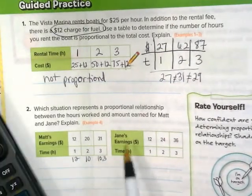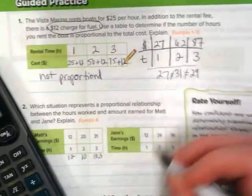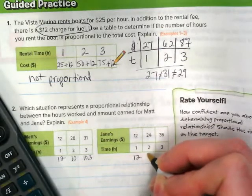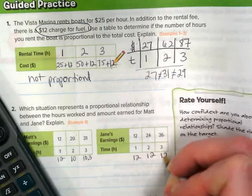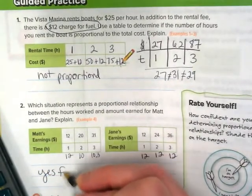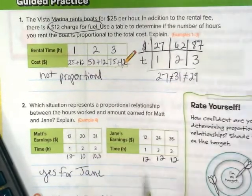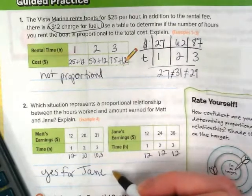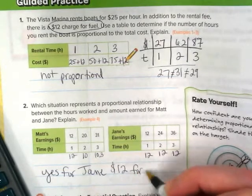Let's try the second example where we've got Jane's earnings versus Matt's. 12 divided by 1 is 12. 24 divided by 2 is also 12. 36 divided by 3 is 12. So yes, we found a proportional one. Yes for Jane because all of those can be brought down to the unit rate of 12 over 1, $12 for every hour.